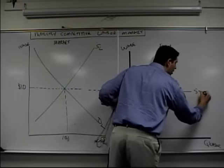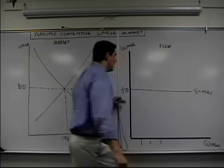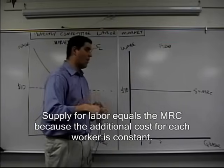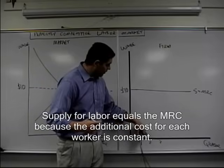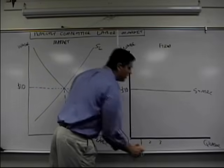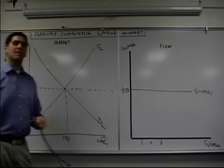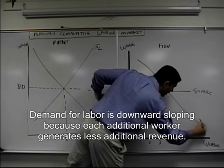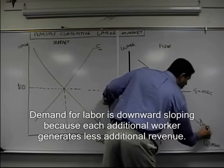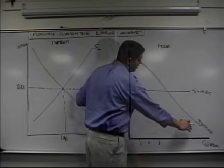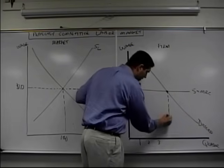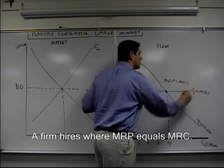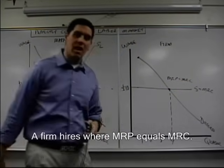This is equal to the marginal resource cost because $10 is the additional cost of hiring an additional resource. I want to hire another worker, $10. Second worker, $10. Third worker, $10. Now, how about the demand? The demand's right here. Take a look. Demand is downward sloping. It looks like this. It is equal to the marginal revenue product. You hire workers right here at, let's say, 4, which is where MRP equals MRC. That's the concept. Until next time.